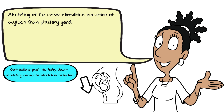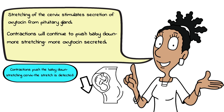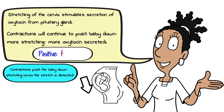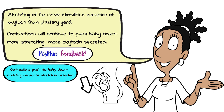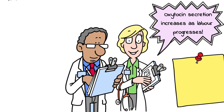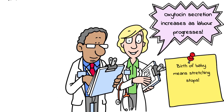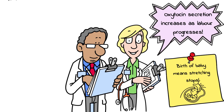Contractions push the baby down, stretching the cervix. The stretch is detected and so more oxytocin is secreted, which intensifies those contractions — and this is an example of positive feedback. More stretching means more oxytocin, which means more intense contractions. But the birth of the baby means the stretching will stop, and so oxytocin secretion will also stop.